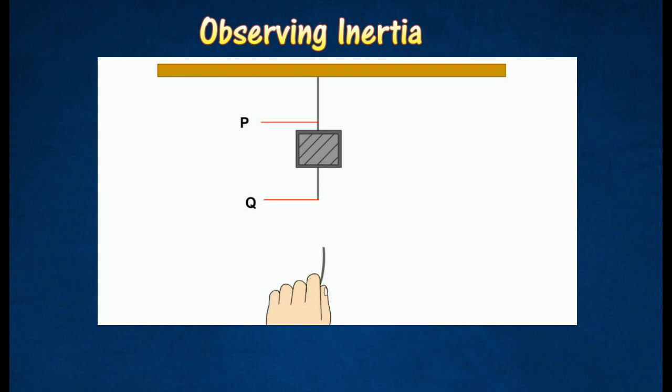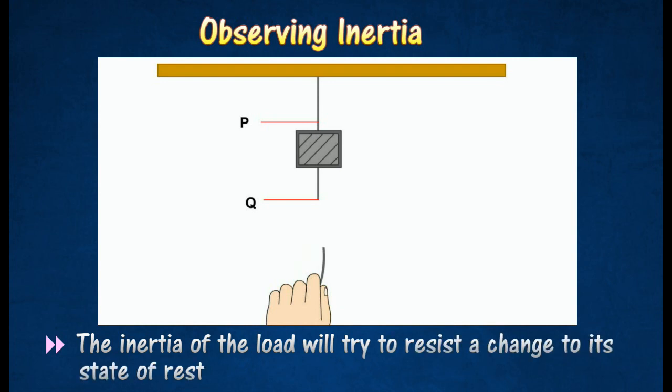This demonstration shows that if the lower string is given a sharp pull, the inertia of the load will try to resist a change to its state of rest, thereby causing the strings to break at point Q.